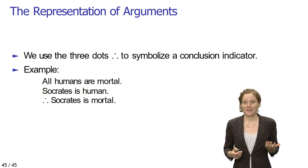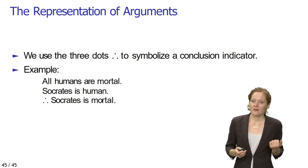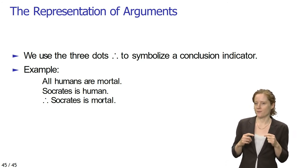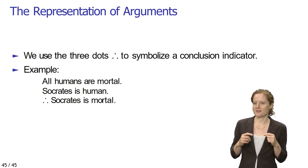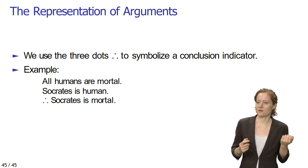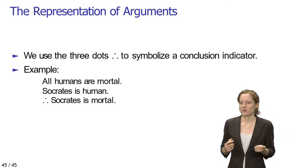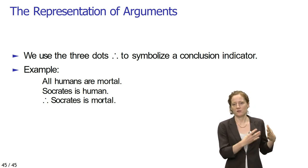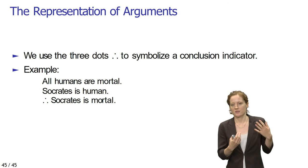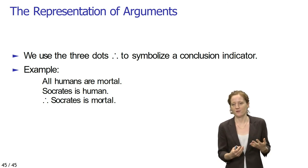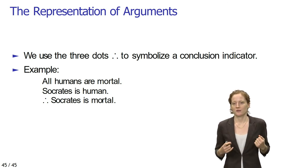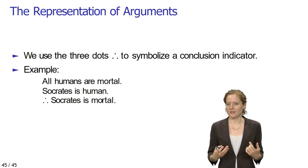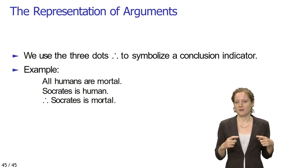As a final clarificatory remark, we will often use three dots forming a little pyramid to symbolize a conclusion indicator. For example, in the argument 'All humans are mortal; Socrates is human; therefore Socrates is mortal,' we can represent the word 'therefore,' which is our conclusion indicator, using these three dots.